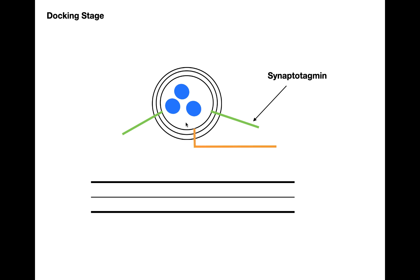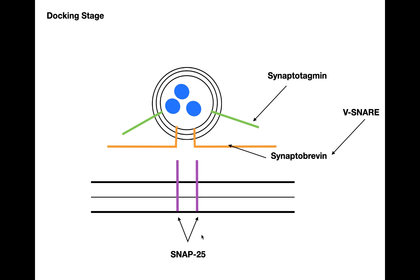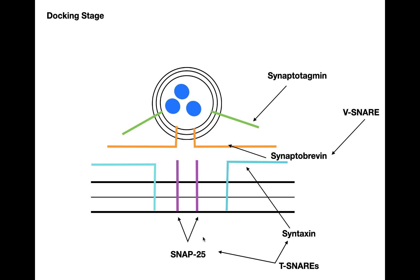Another protein in the vesicle is synaptobrevin, also known as a V-snare or vesicular snare protein. In the presynaptic membrane, we see two proteins called SNAP25, and we also see syntaxin. Syntaxin and SNAP25 are both known as T-snares. The last protein is RAB3, a GTPase found in the vesicle.